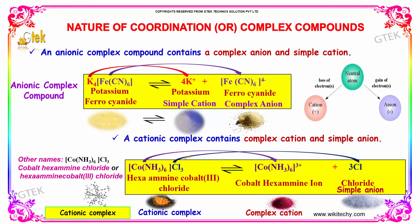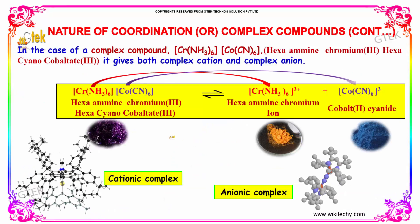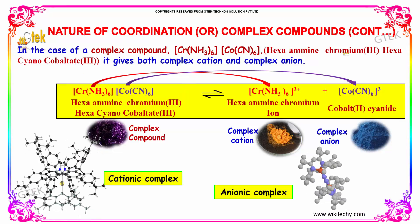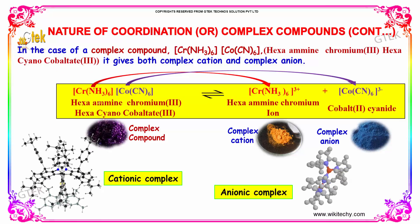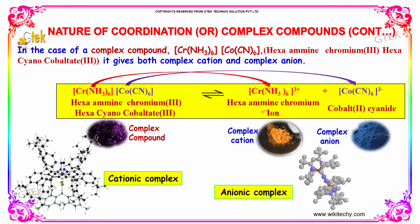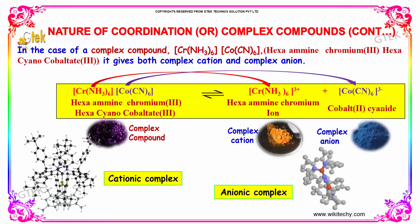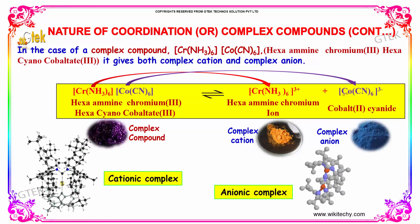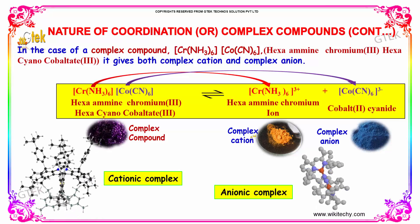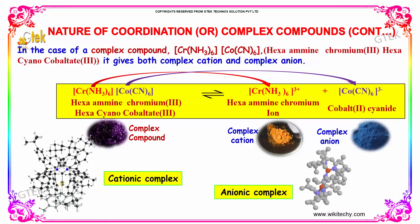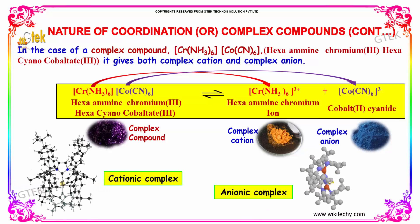Hexamine cobalt chloride gives a hexamine cobalt ion — a complex cation — and chloride, which is a simple anion. In the case of a complex compound, hexamine chromium(III) hexacyanocobaltate gives both a complex cation and a complex anion: the hexamine chromium ion and the hexacyanocobaltate ion. So both a complex cation and complex anion are created.